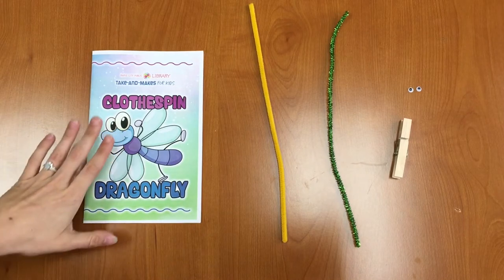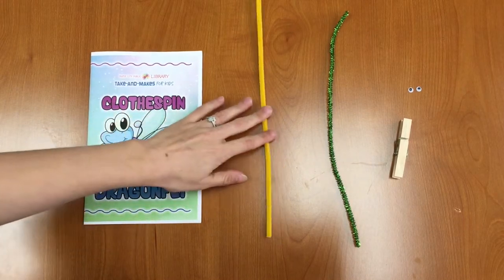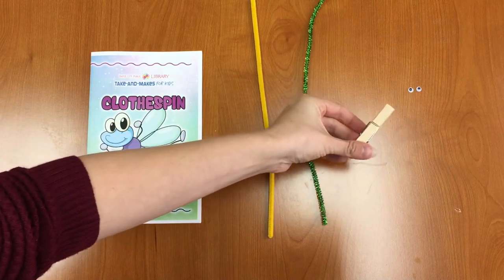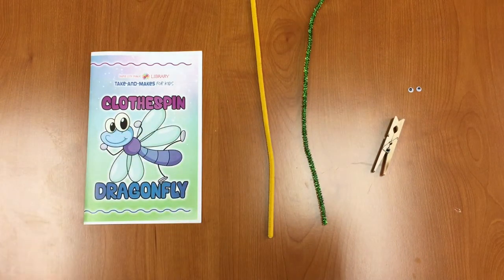In your Take and Make kit you should have an instruction booklet, two pipe cleaners that are different colors, a clothespin, and two googly eyes. Let's get started.